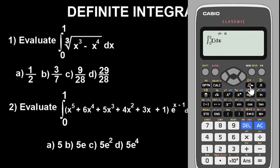You move up and put the upper limit, which is one. Come down, lower limit is zero. Then you move this key to the center and input what we have: cube root of x raised to power three minus x raised to power four. To bring out the cube root, press shift then press this button to come out.